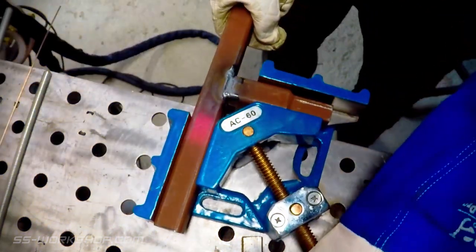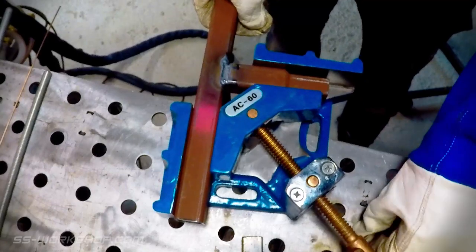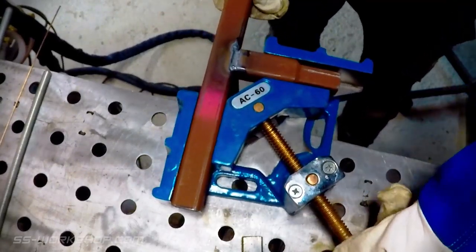Once one side's welded I can pop it out of the clamp and weld the rest of the sides up on the bench and in the vice.